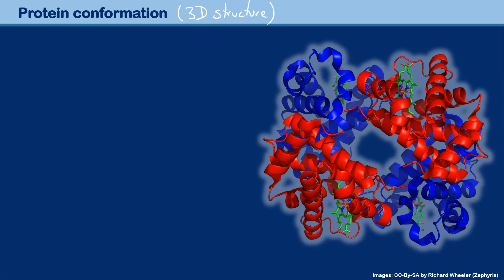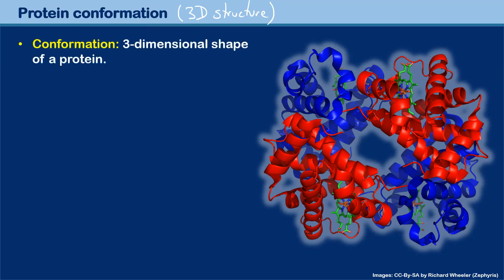You can say 'what's the three-dimensional structure of a protein?' and you can also say 'what's the protein's conformation?' Scientists invented a separate term for it — that's the three-dimensional shape of a protein. And you can see in hemoglobin that it's not a flat molecule, but there are these spirals.